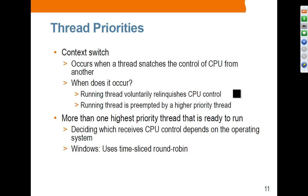If you have a single CPU, threads have to take turns — those turns are called context switches. A context switch can occur when a running thread voluntarily relinquishes CPU control by suspending itself, or when a running thread is preempted by a higher priority thread, where the operating system interrupts the existing running thread because a higher priority thread is waiting for the CPU.